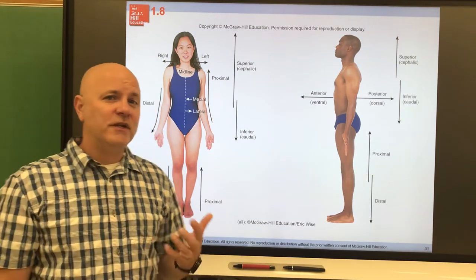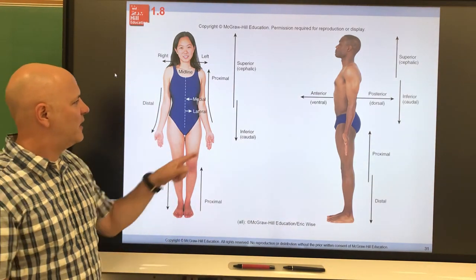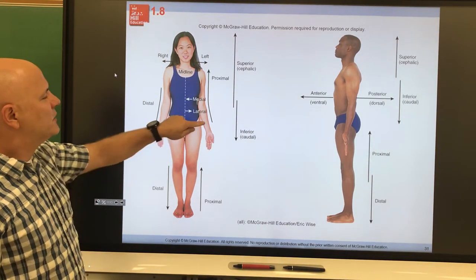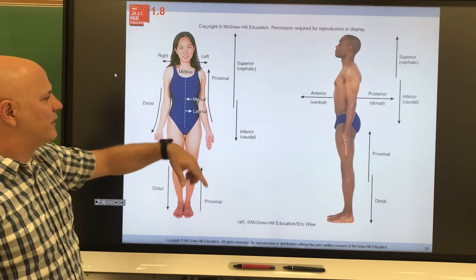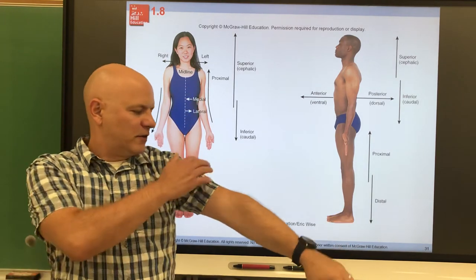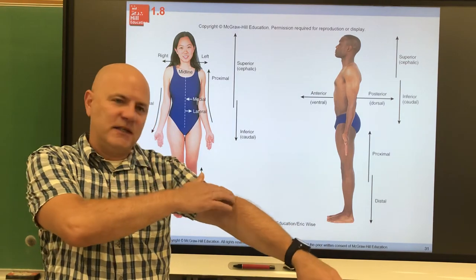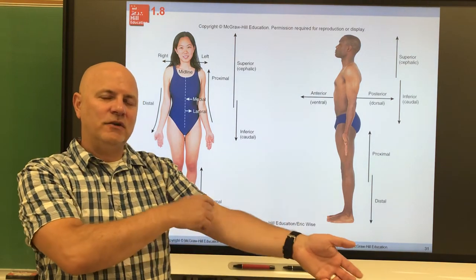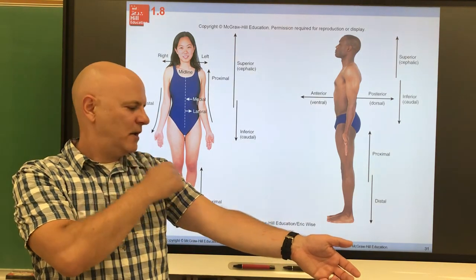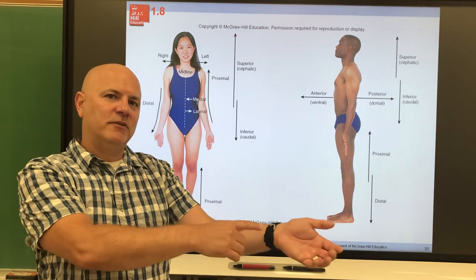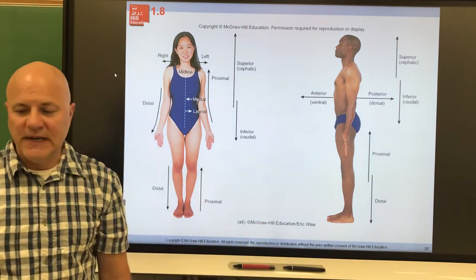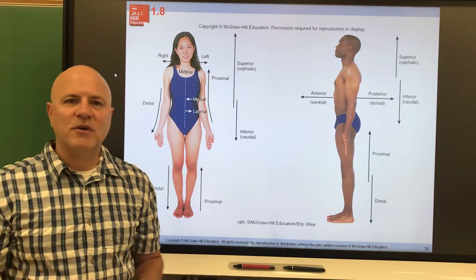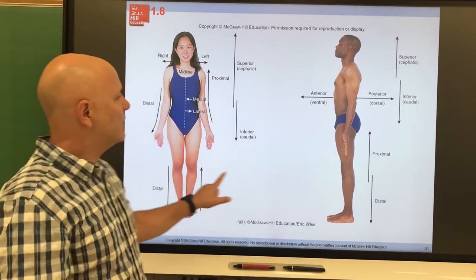The arms are lateral to the sternum; the sternum is medial to the arms. Proximal and distal refer to points of attachment — proximal is closer to the point of attachment, distal is farther. The wrist is distal to the elbow; the elbow is proximal to the wrist. Superficial means towards or at the body surface; deep means away from the body surface.